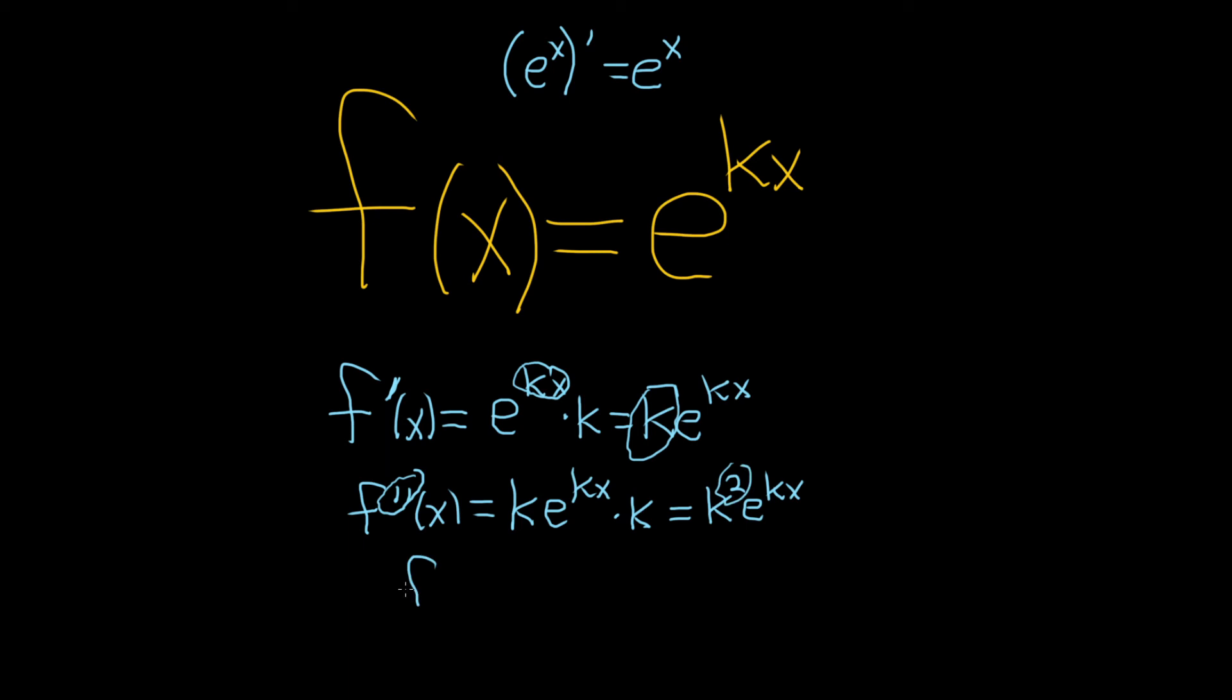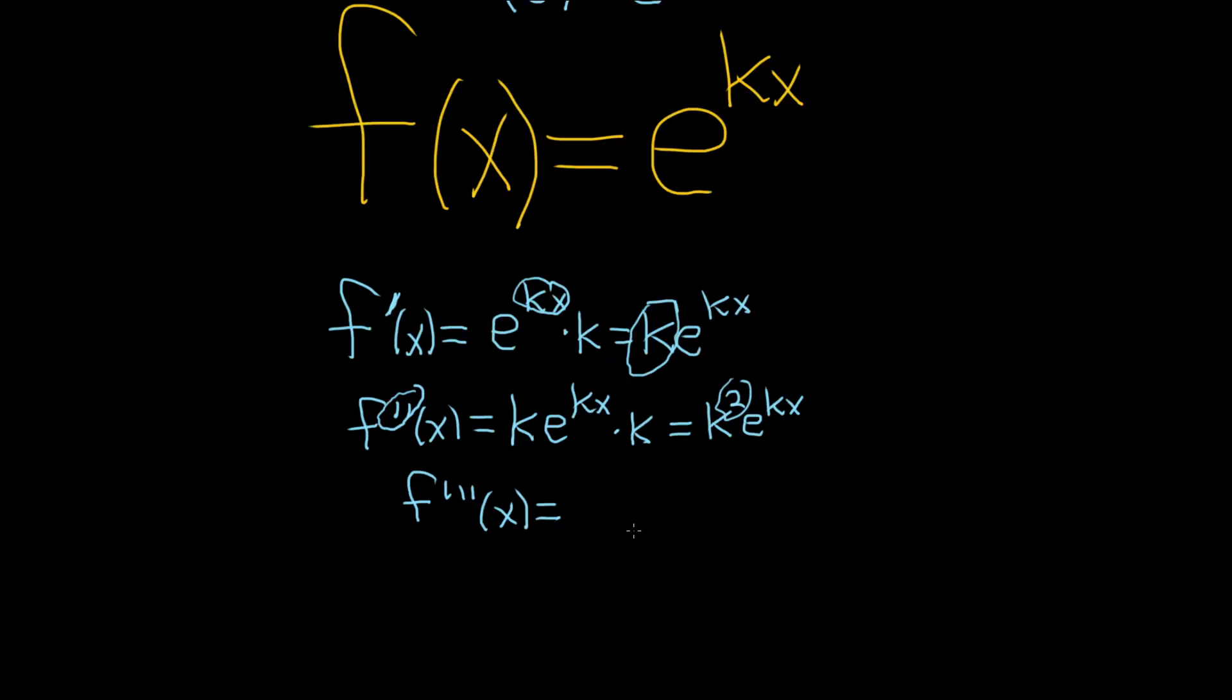Let's do one more just to make sure. For f triple prime of x, that k squared is a constant because k is a constant, so it hangs out. The derivative of e to the x is e to the x, so here it's going to be the chain rule again. E to the kx times the derivative of kx, which is just k. Multiplying the k's, we get k cubed e to the kx.